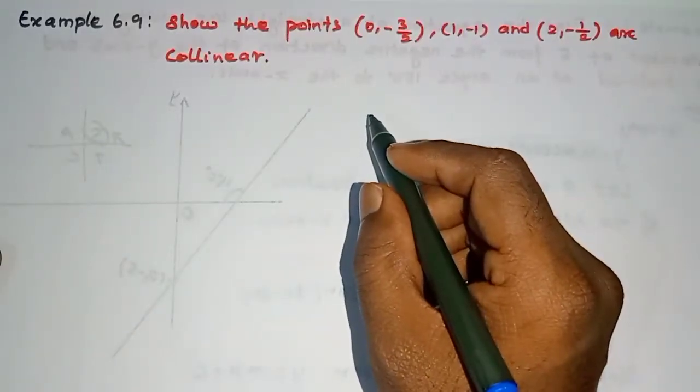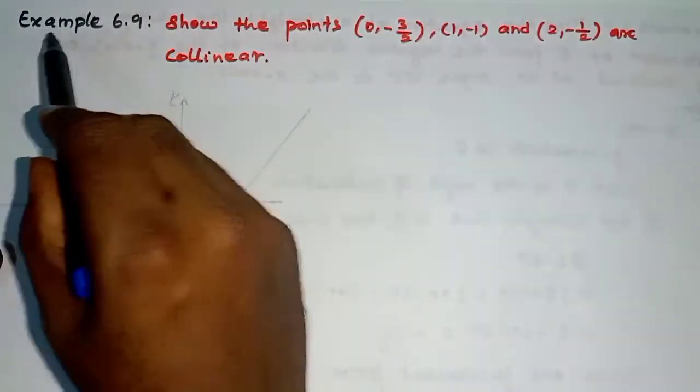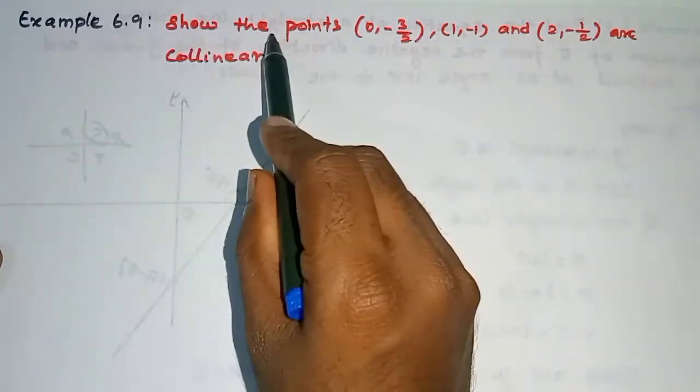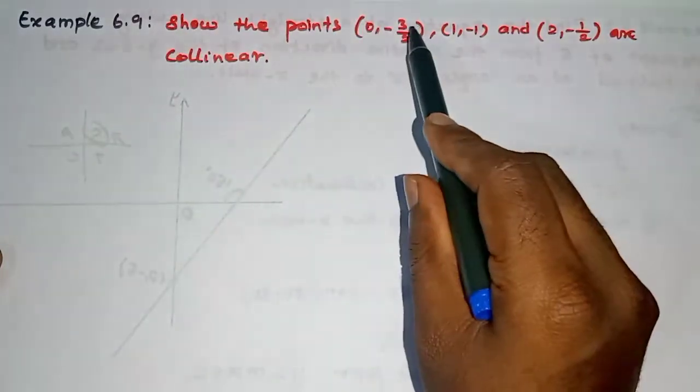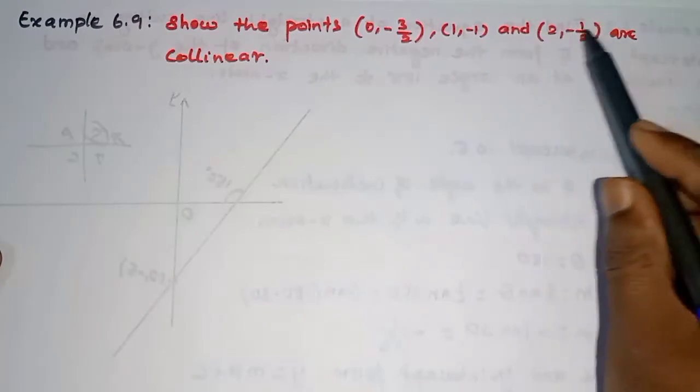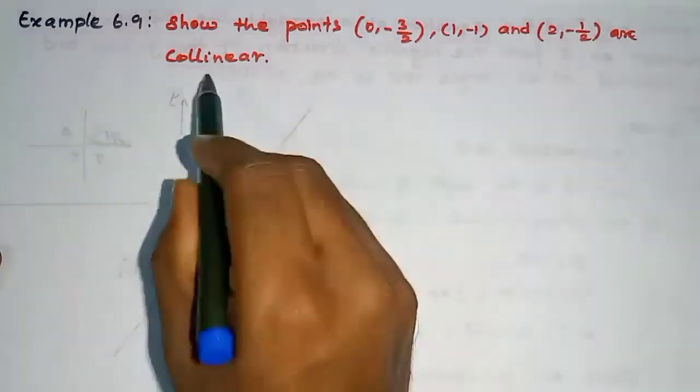Hi student, this is Selambu Max tuition, learn standard, example 6.9. Show that the points (0, -3/2), (1, -1) and (2, -1/2) are collinear.